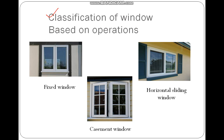We are not dealing with the components of windows here because they are the same as the components of doors, which were covered in past videos. Getting into the classifications of windows — first, based on operation: the fixed window is only for lighting purposes, not for air circulation. It is fixed and not movable at all. Next is the horizontal sliding window, which can move only in the horizontal direction.